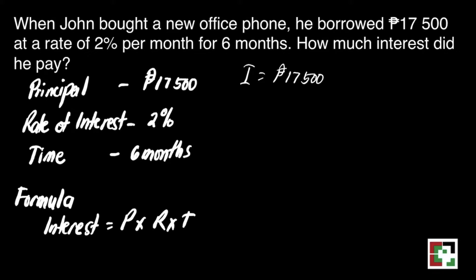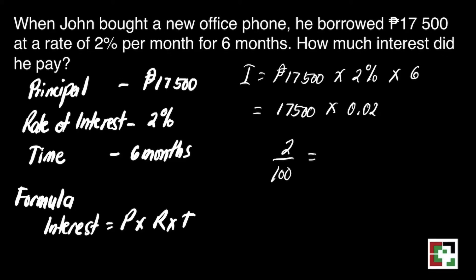So we have 17,500 times 2% times 6. We have to convert 2% to decimal. Since percent is always equivalent to 100, that will be 2 out of 100. If you divide 2 by 100, you will get 2 hundredths — that's why we have 0.02 there.